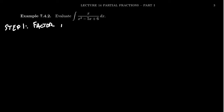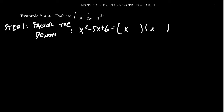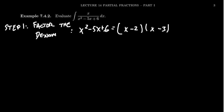We need to factor the denominator, which here is x squared minus 5x plus 6. We have a quadratic trinomial whose leading coefficient is 1, so we're looking for factors of 6 that add up to negative 5. We can take negative 2 and negative 3. Notice: x times x is x squared, negative 2 times negative 3 is positive 6, and negative 3x plus negative 2x gives negative 5x. We found the correct factorization.